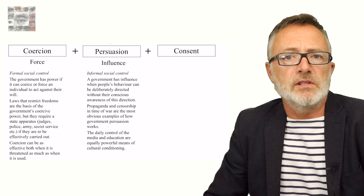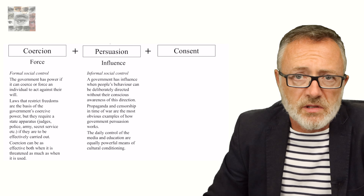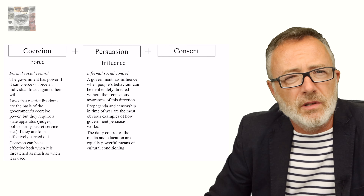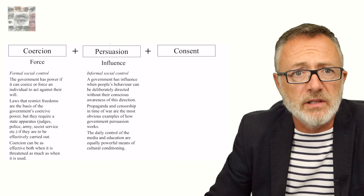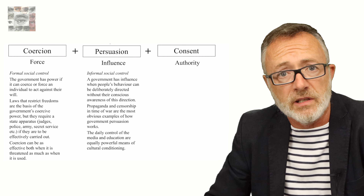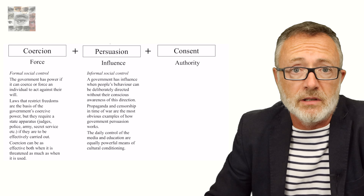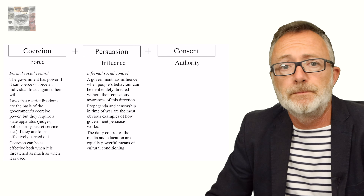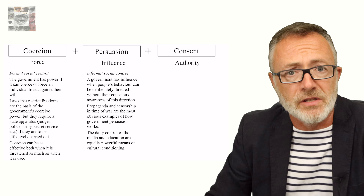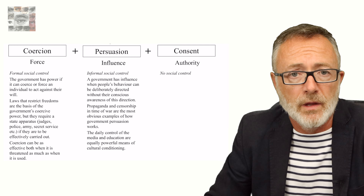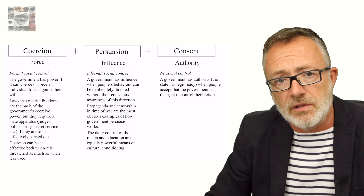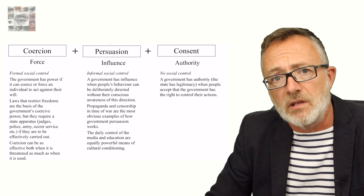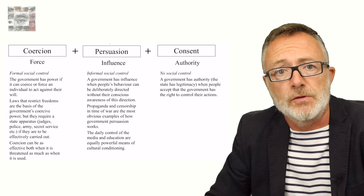Finally, the third reason why citizens conform and do what the state tells them to do is because the citizens want to. This is called the consent of the governed and is based on the belief that the state has authority over the individual because the individual has voluntarily agreed to be governed — because it is in their interest to be governed. A government has authority — meaning the state has legitimacy — when people accept that the government has the right to control their actions.